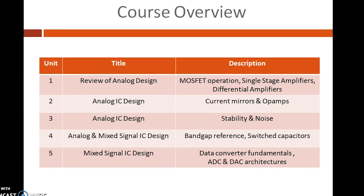The third unit starts with the stability of analog circuits. Stability of op-amp circuits is discussed with frequency compensation techniques. Today's analog designers constantly deal with the problem of noise because it trades with power dissipation, speed, and linearity. So learning about noise will be really helpful in the design of analog circuits. The third unit also discusses noise in integrated circuits. Unit 4 deals with band gap references, which are important circuits used to generate reference voltages in ICs. Switched capacitor circuits are also discussed in this unit.